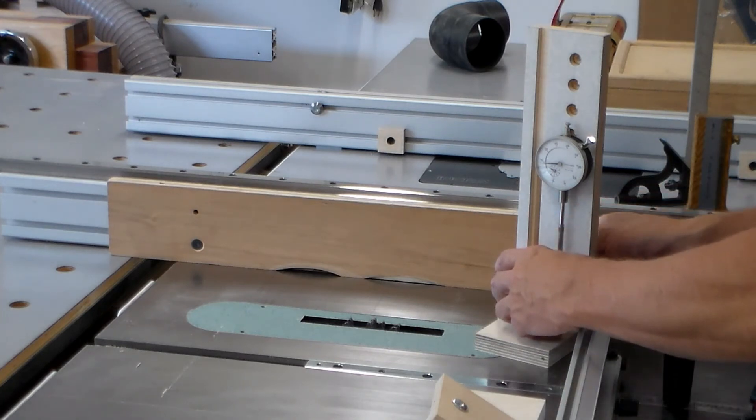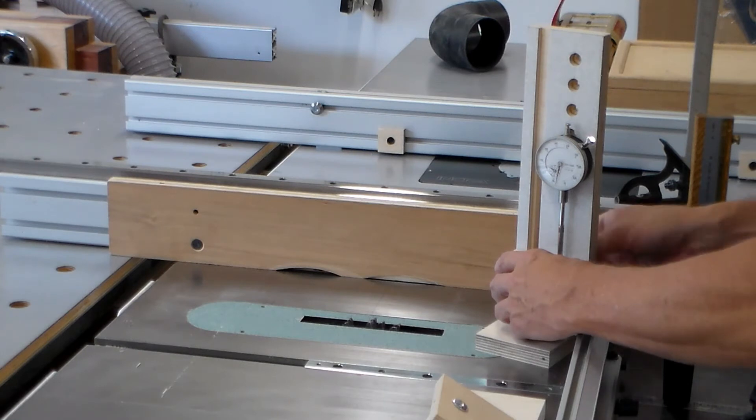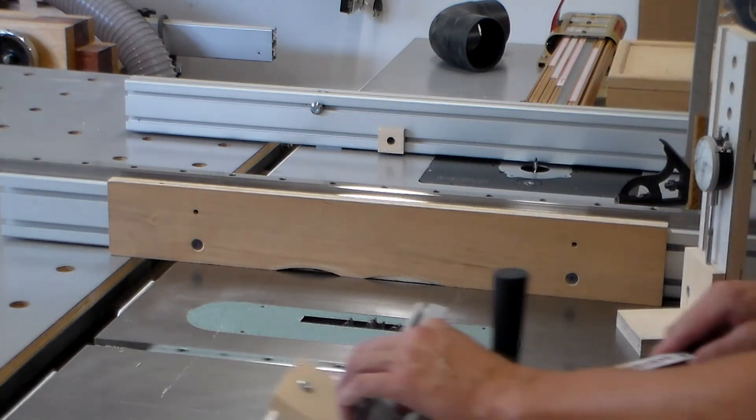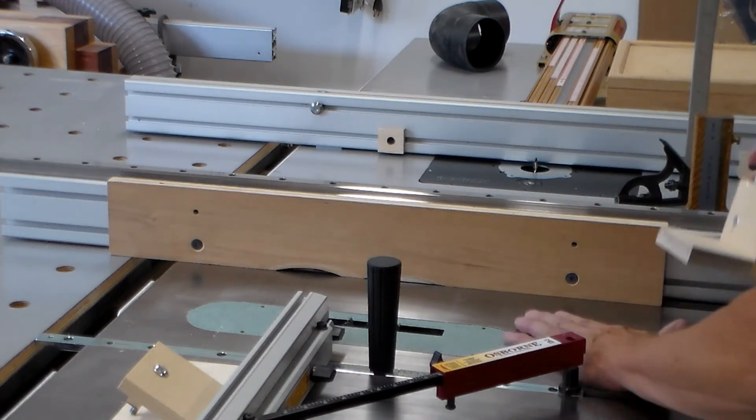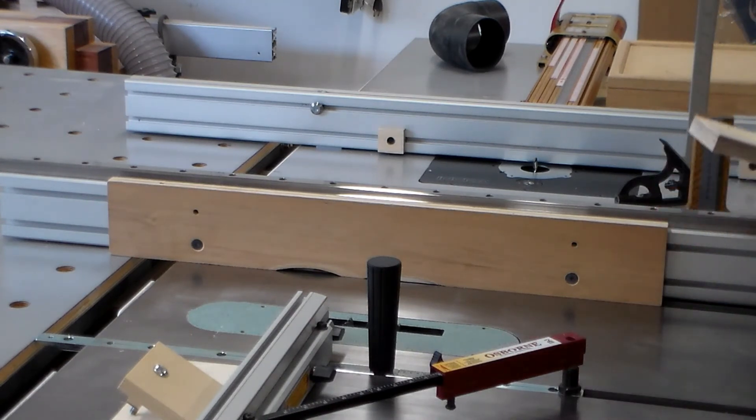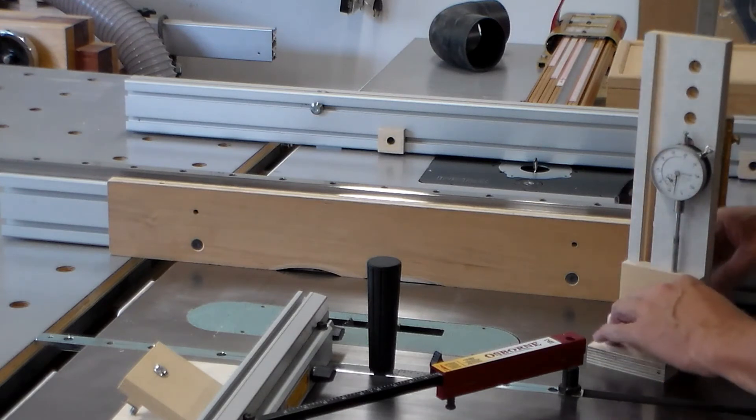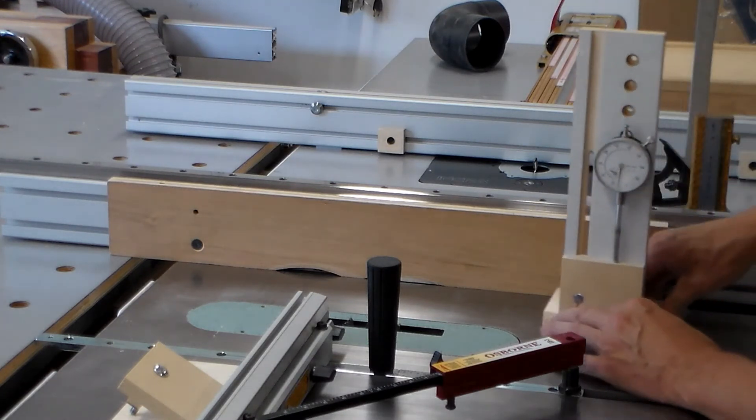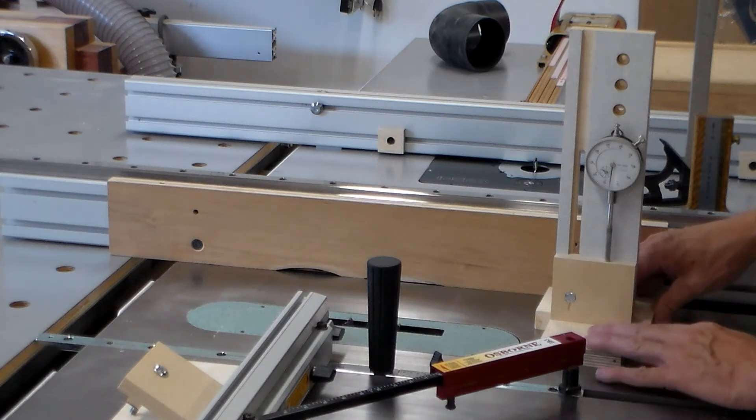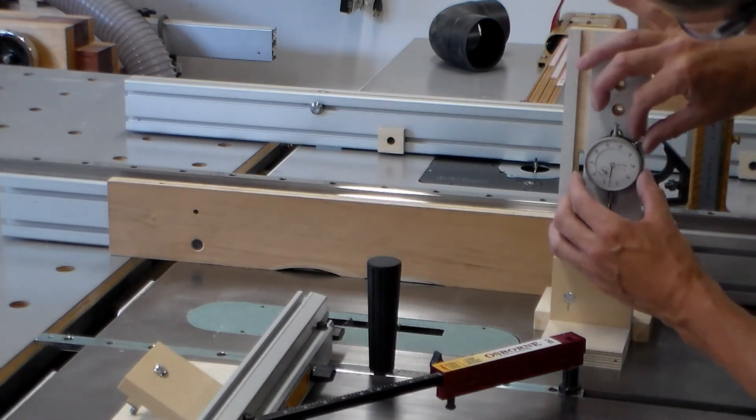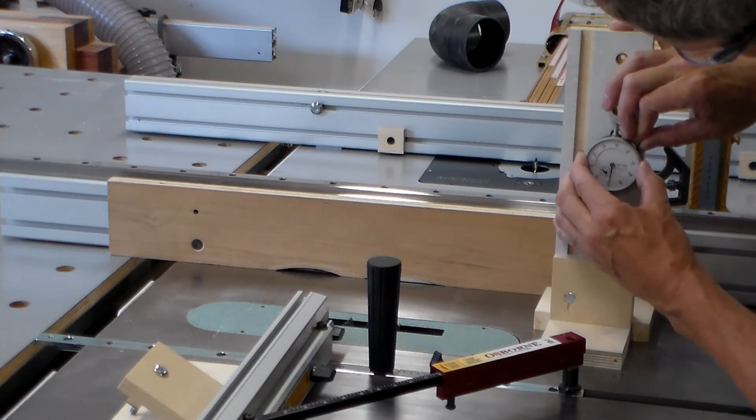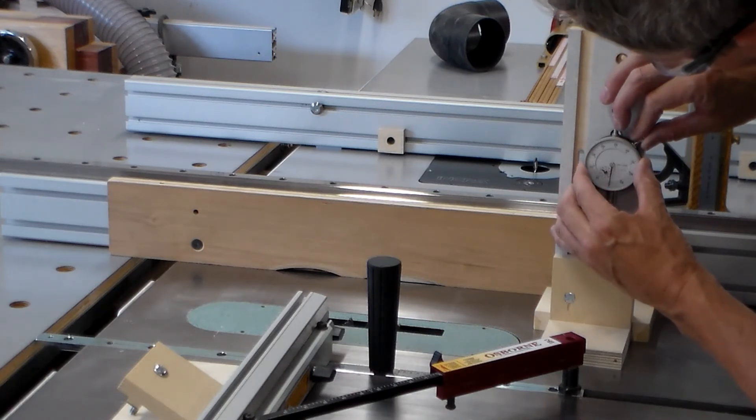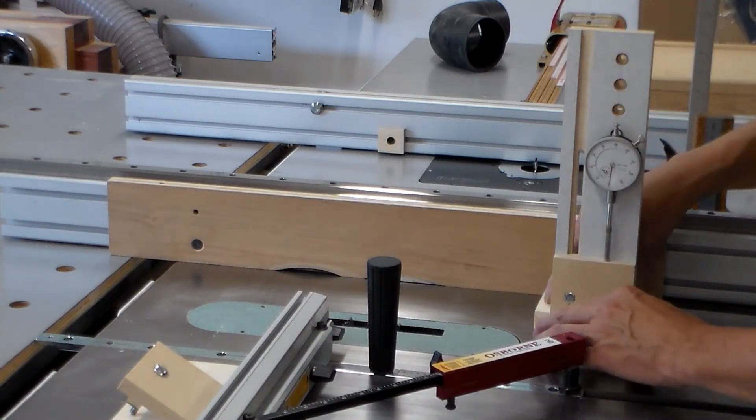One thing you want to make sure when you're doing this too is that you've got a nice clean table. You don't have a bunch of bread crumbs floating around underneath things. So we'll put it down, zero it out.